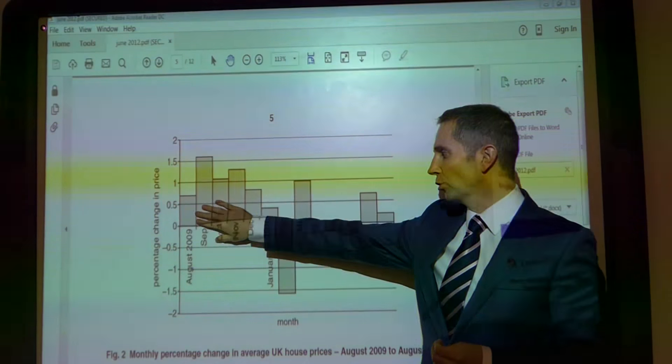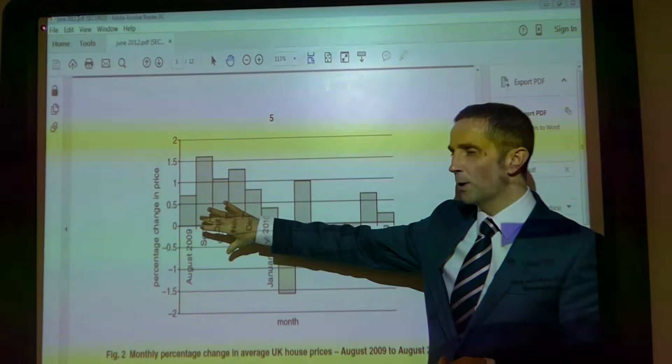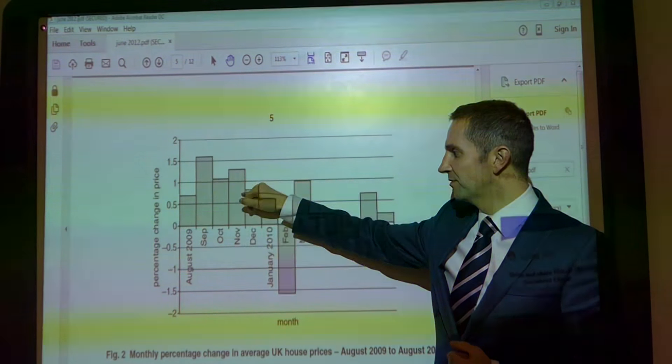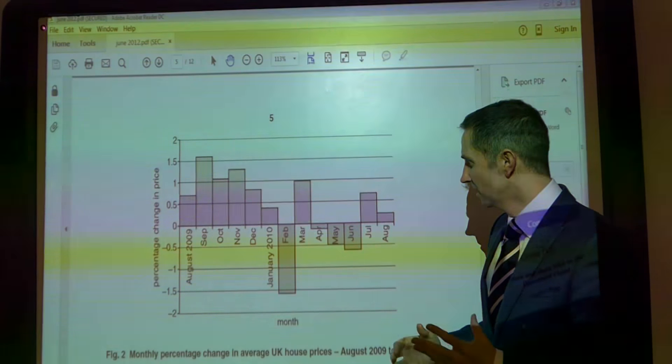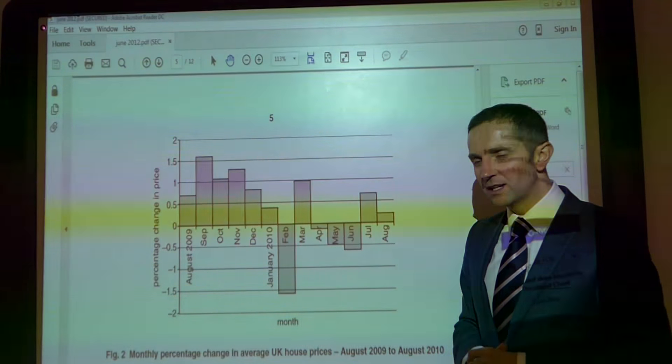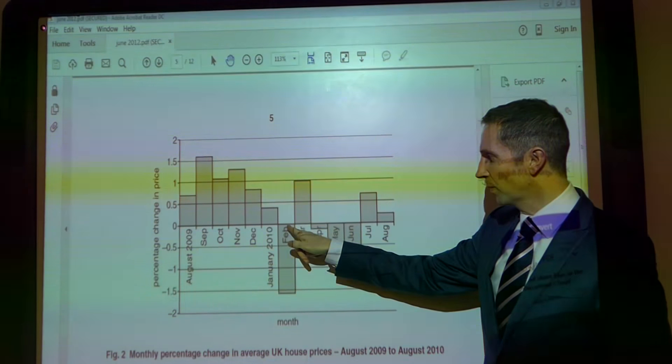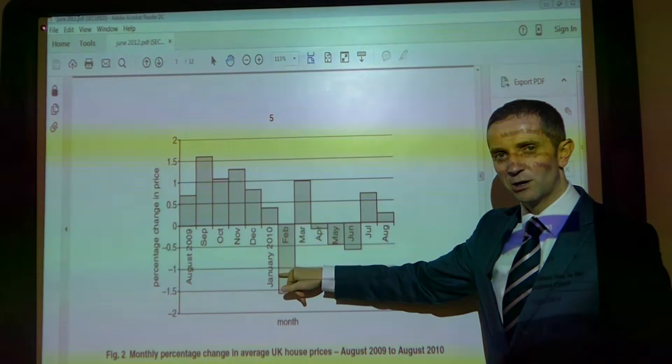And we can see that across all of this data. Anywhere where we have got positive bars above zero, house prices are always rising. The only time we can see here house prices falling is when we dip beneath the zero line.